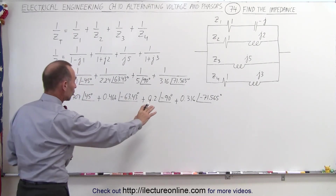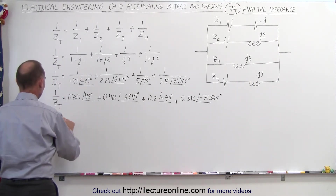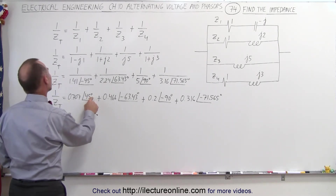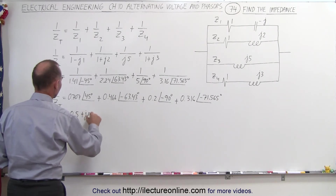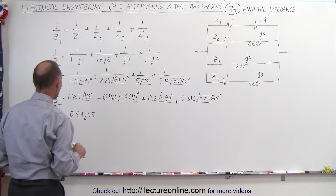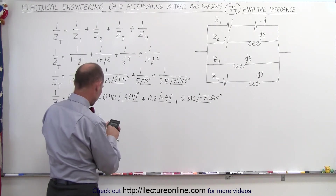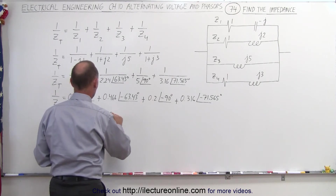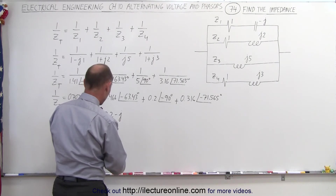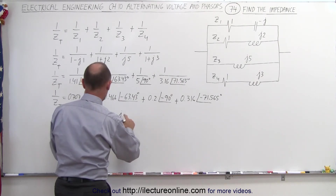Before we can add those terms, we need to reconvert each one back into real and imaginary parts. So 1 over Z total: the first term gives 0.5 plus J0.5, since cosine of 45° times 0.707 equals 0.5. The next term: cosine of 63.43° times 0.446 gives 0.2, and sine of 63.43° times 0.446 gives 0.4, so we get 0.2 minus J0.4.